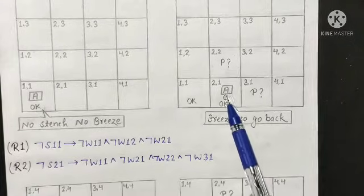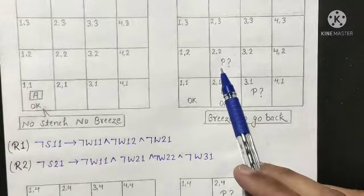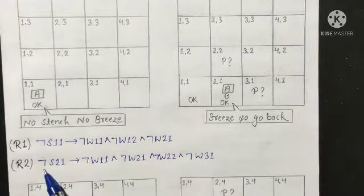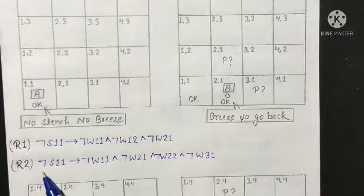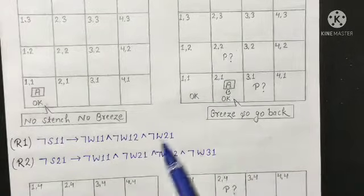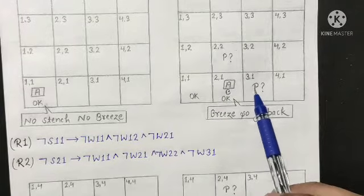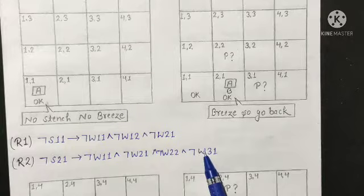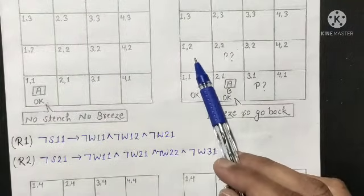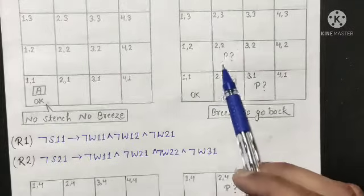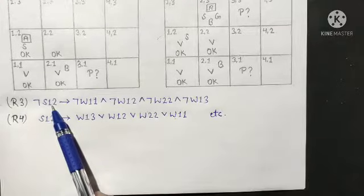This implies there can be a pit either in room 2,2 or room 3,1. So it will be good for the agent to go back. In room 2,1, there is no stench — that's why: no stench in room 2,1 implies no Wumpus in 1,1, no Wumpus in 2,1, no Wumpus in 2,2, and no Wumpus in 3,1. Similarly, if there is no stench in room 1,2, it means no Wumpus in 1,1, no Wumpus in 2,2, and no Wumpus in 1,3.